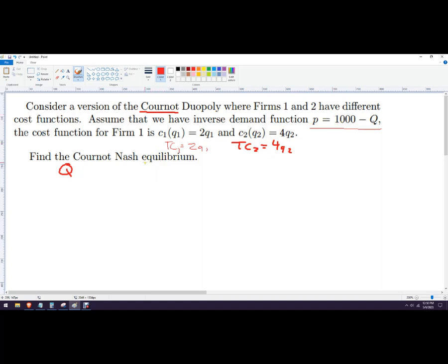And we need to figure out how many units each firm will be producing when they know what the other firm can do. The only thing that's different about this problem that you'll see is that there are two different cost, marginal, well, marginal and total cost functions.